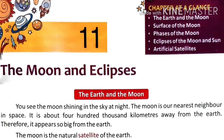The first topic of this chapter is the Earth and the Moon. You see the Moon shining in the sky at night. The Moon is our nearest neighbor in space. It is about 400,000 kilometers away from the Earth. Therefore it appears so big from the Earth.